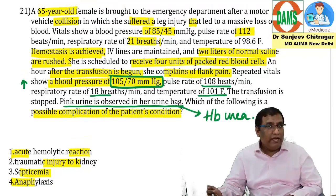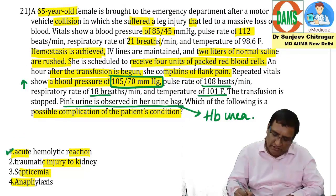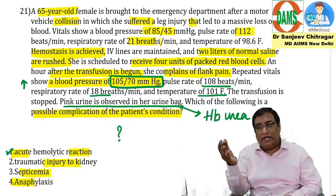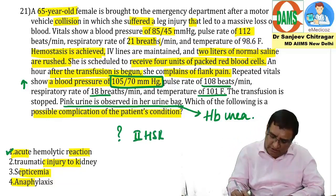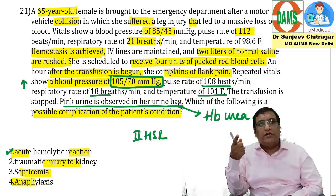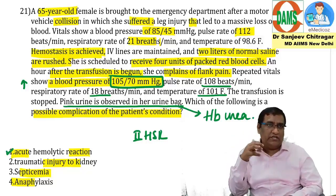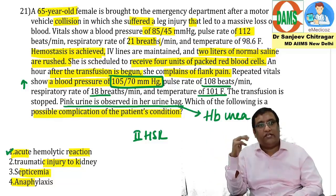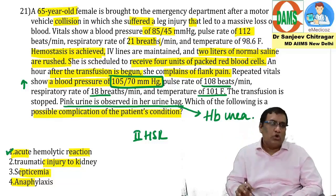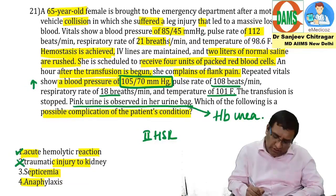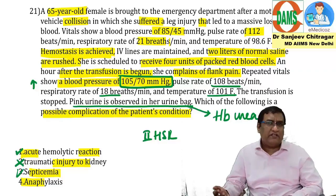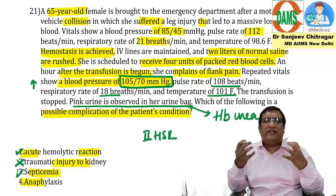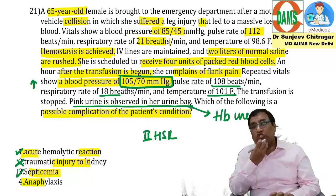Hemoglobinuria indicates a hemolytic reaction — this is an acute hemolytic reaction, a type II hypersensitivity reaction caused by antibodies. It could have been prevented by proper cross-matching and blood grouping. Treatment: stop transfusion, normalize blood pressure, give excess fluids, and use diuretics once BP is normalized to flush out hemoglobin. Traumatic kidney injury would cause hematuria, not hemoglobinuria. Septicemia doesn't fit — only fever is present. Anaphylaxis would have urticaria, angioedema, and laryngeal edema.